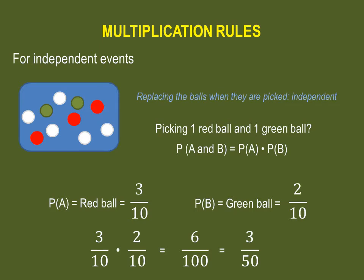Simplified, you have a three out of fifty probability of picking a red ball and then a green ball.